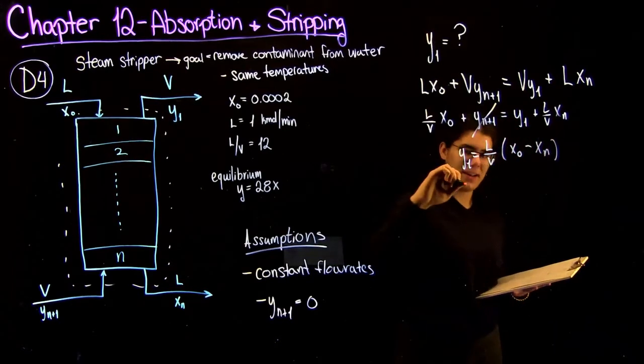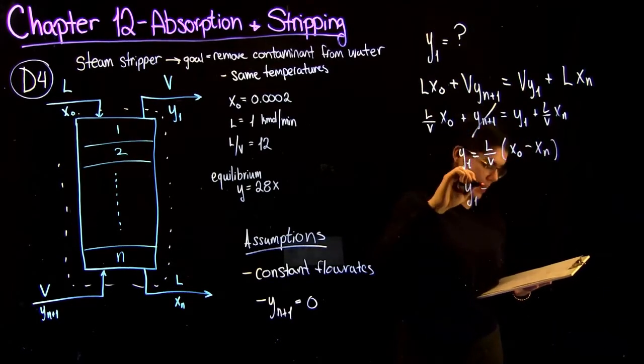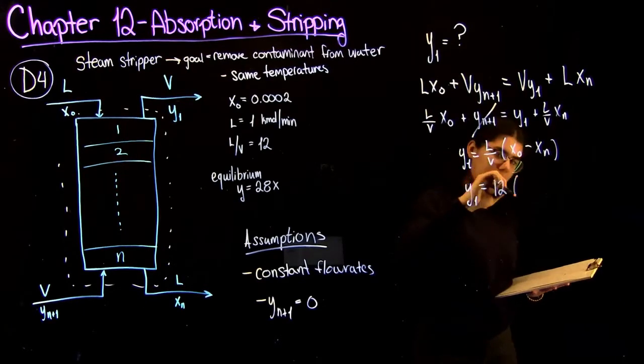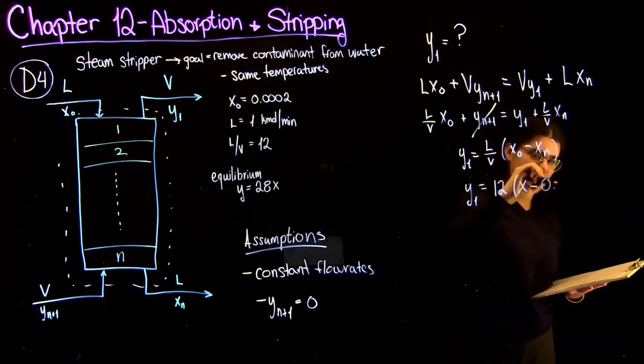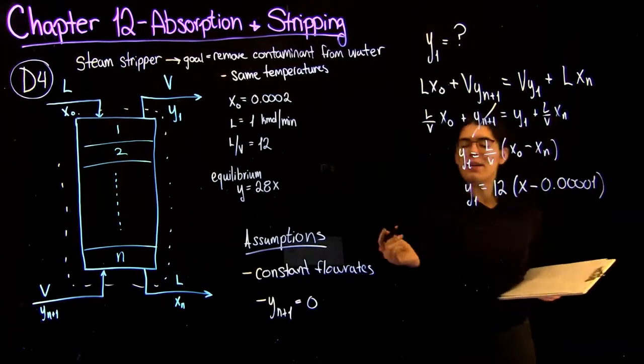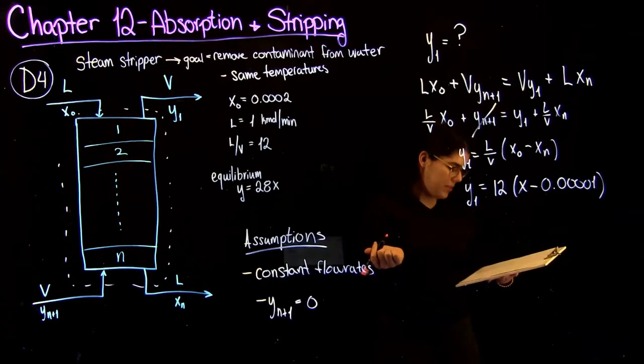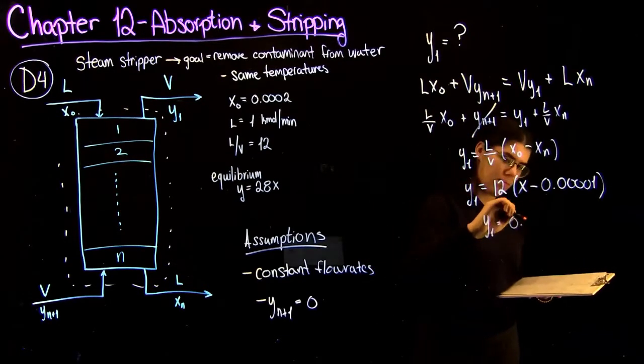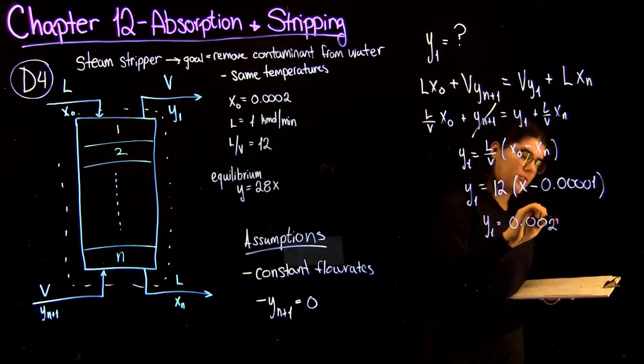So we're going to get Y1 equals L over Vx0 minus Xn. Or to get the operating line equation form, we'll just plug in the numbers that we know. So equals 12x minus, and then the composition of Xn that was given. So if you just plug in your known values, you're going to get that Y1 equals 0.00228.